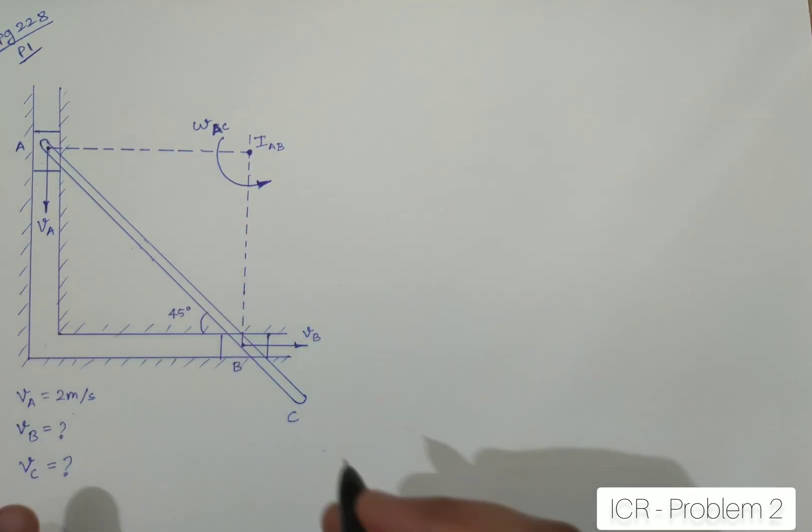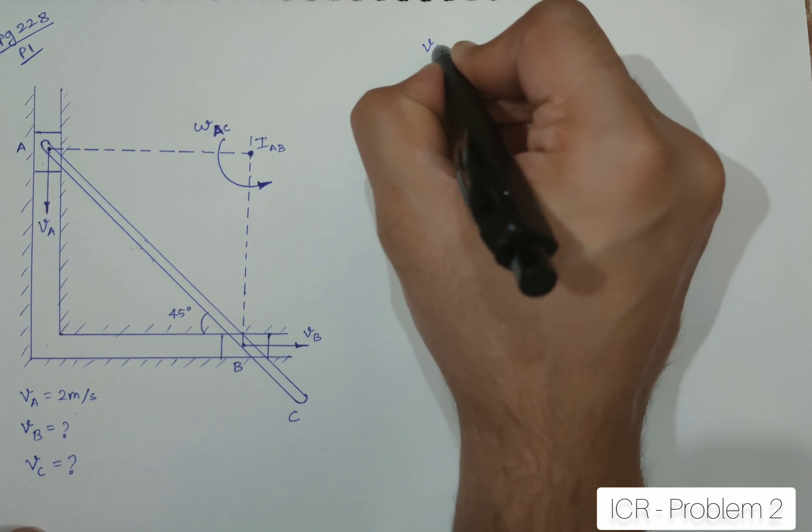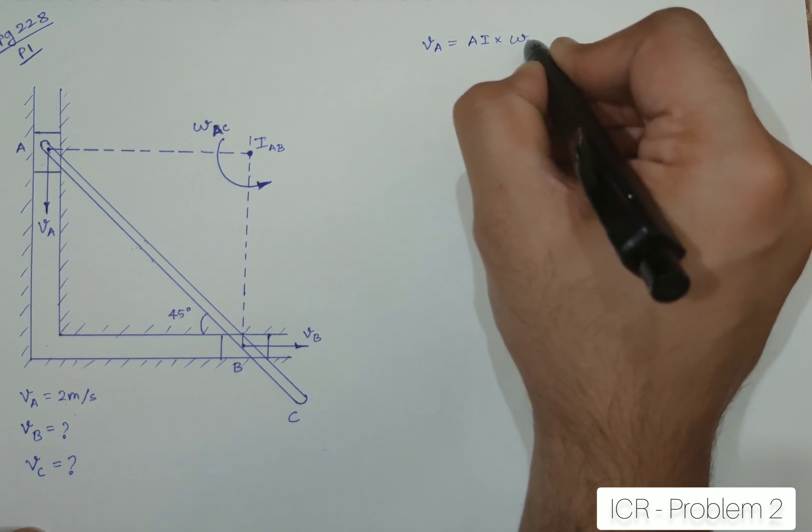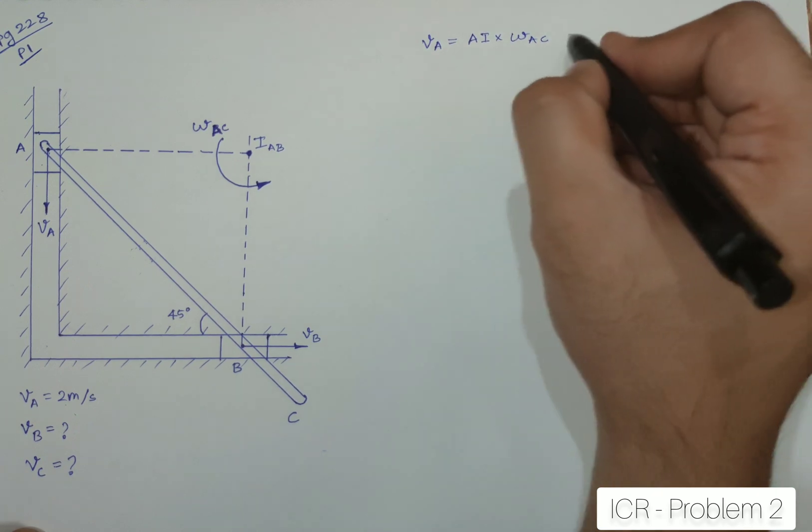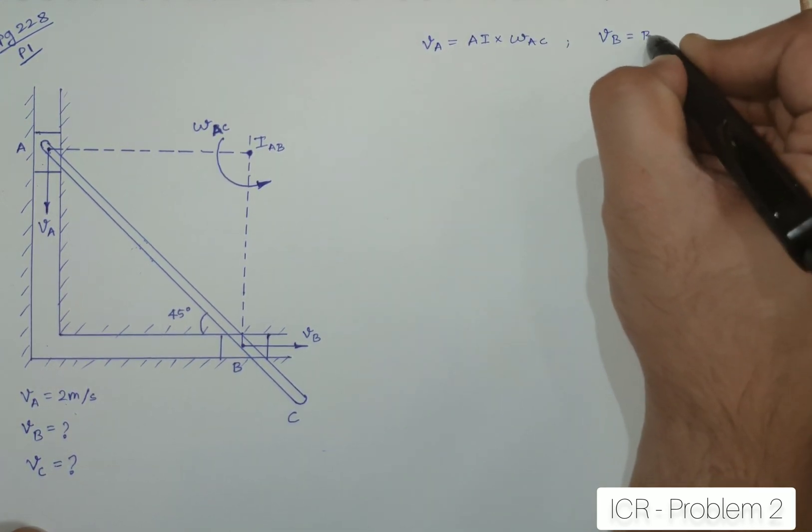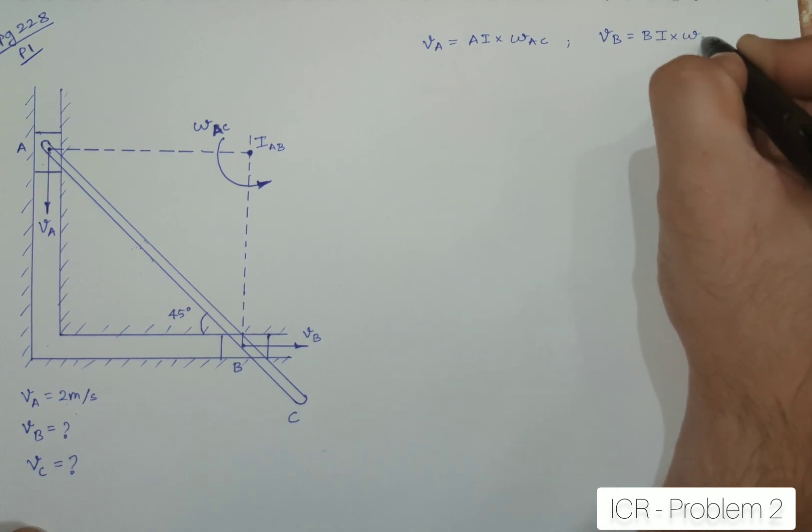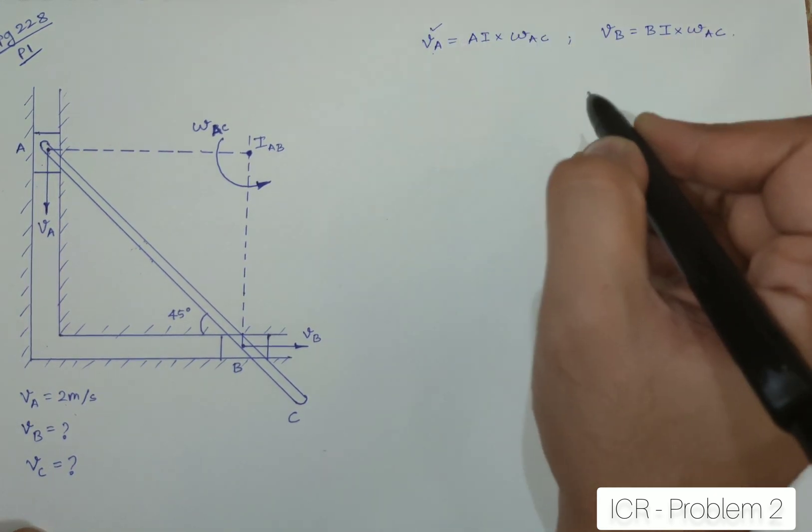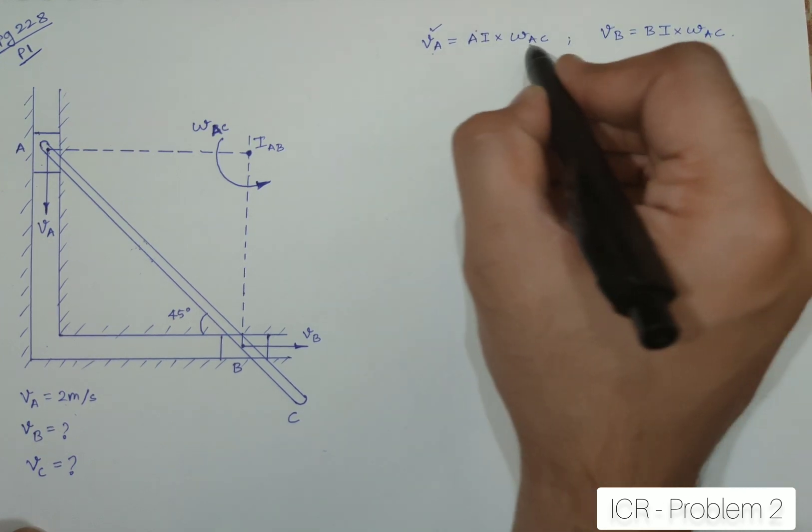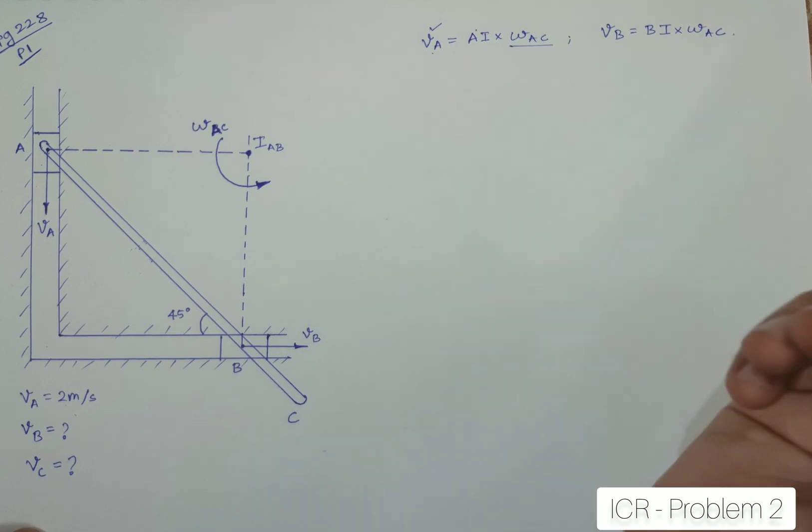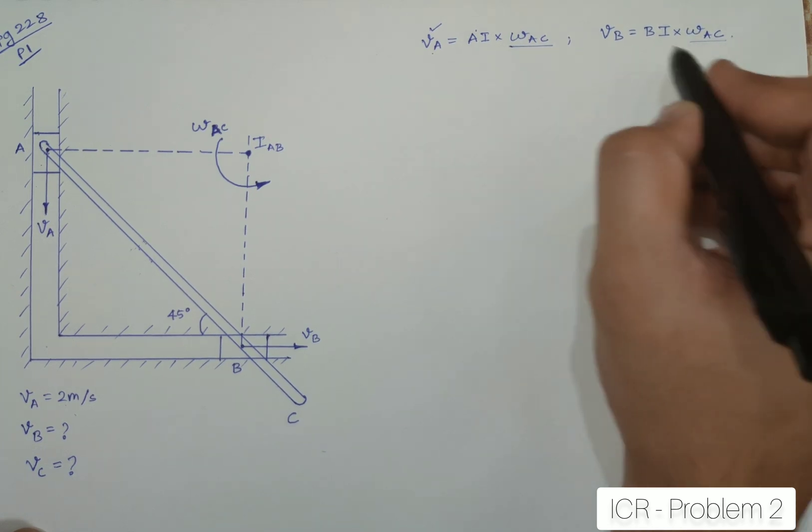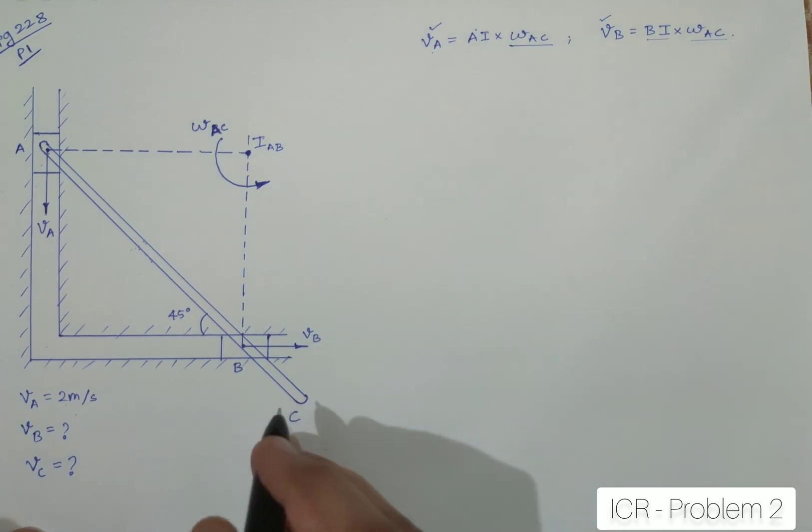Now, here we can get the relationship that VA is equal to AI into omega AC. Similarly, I can also write VB is equal to BI into omega AC. In this first part, I know VA is 2 meters per second. Then, I have to just find out AI and I will be able to locate or find out omega AC. Now, when I find out omega AC, I will be able to use this omega AC over here. If I know BI, I will be able to find out VB. So, half of my job will be done. So, let us go and find out. Let us go and get this triangle AIB.